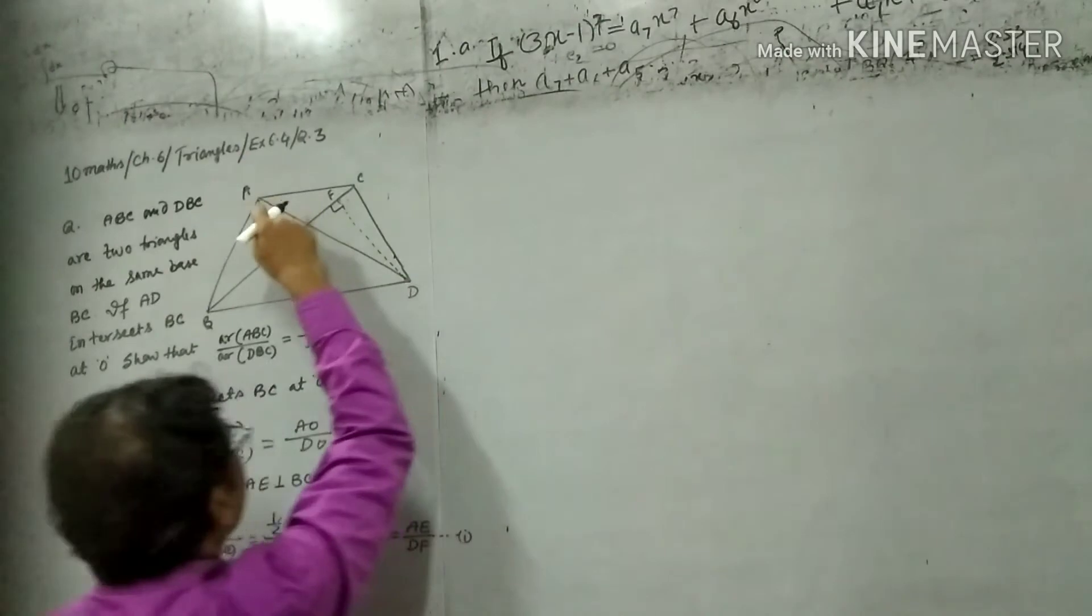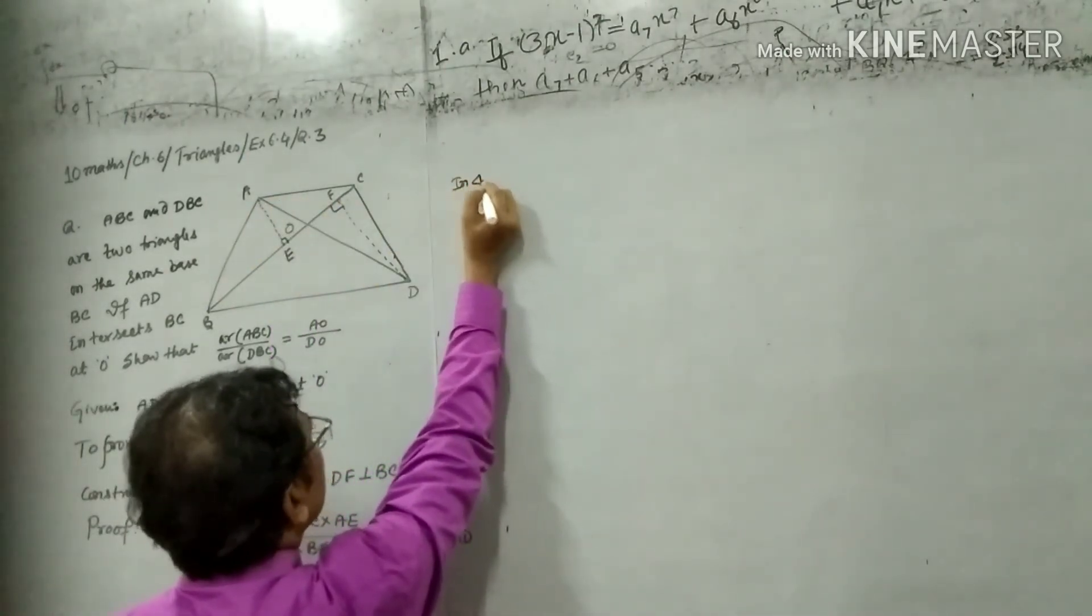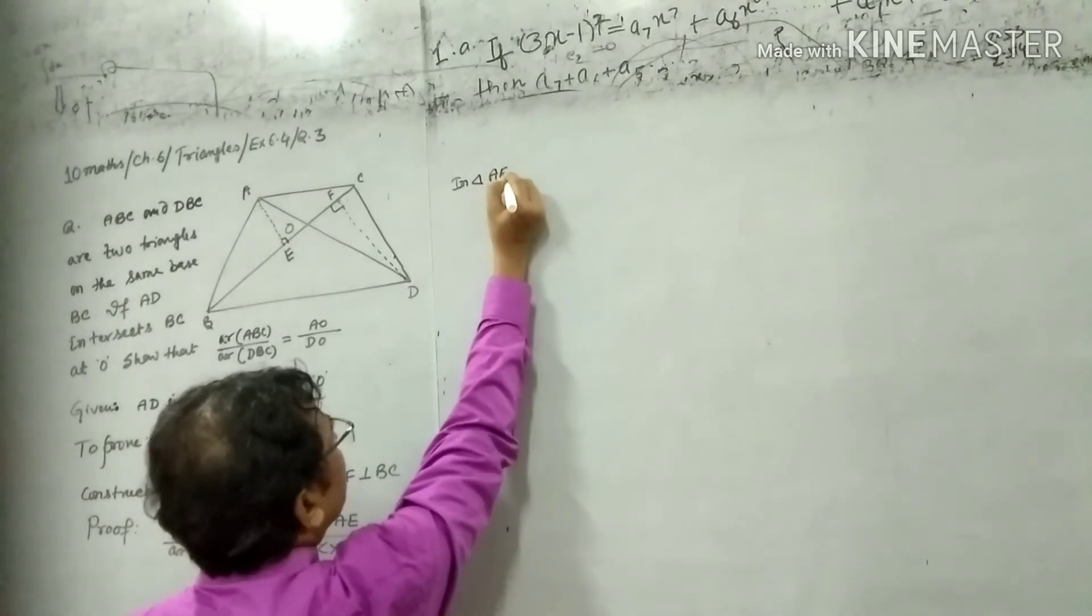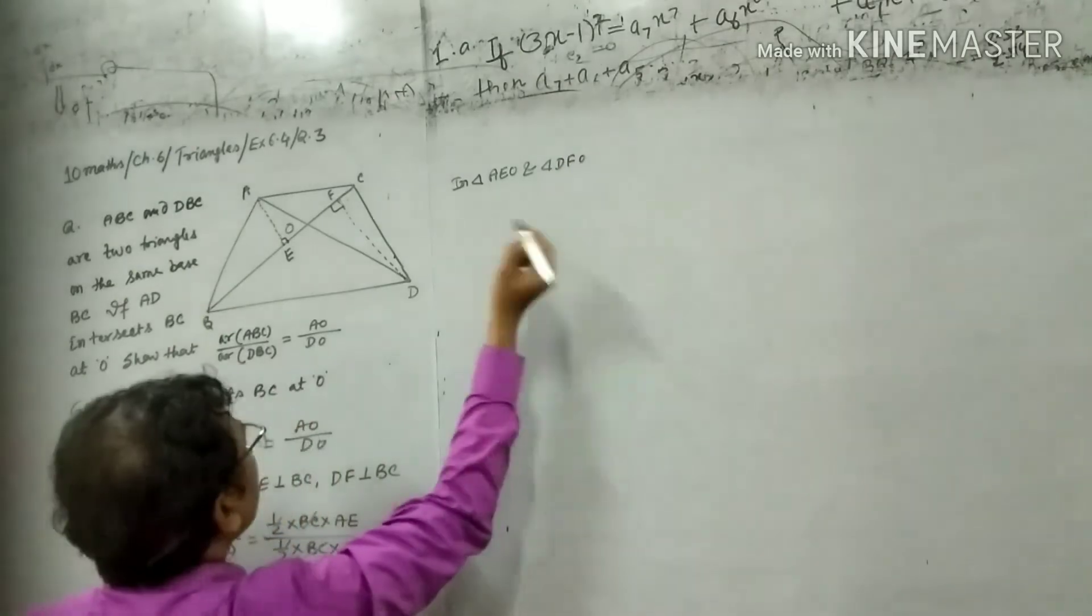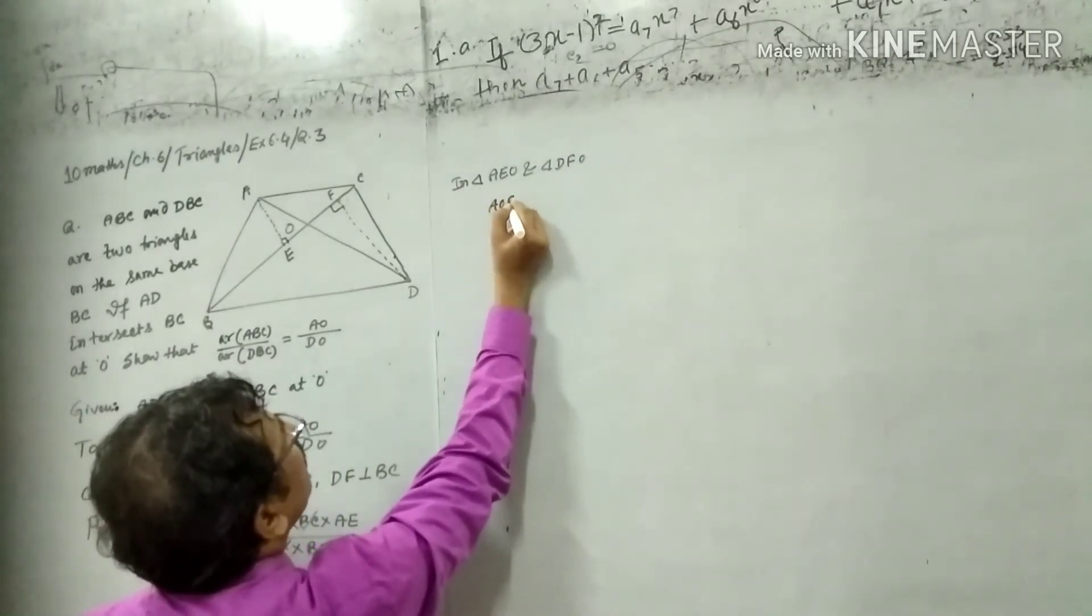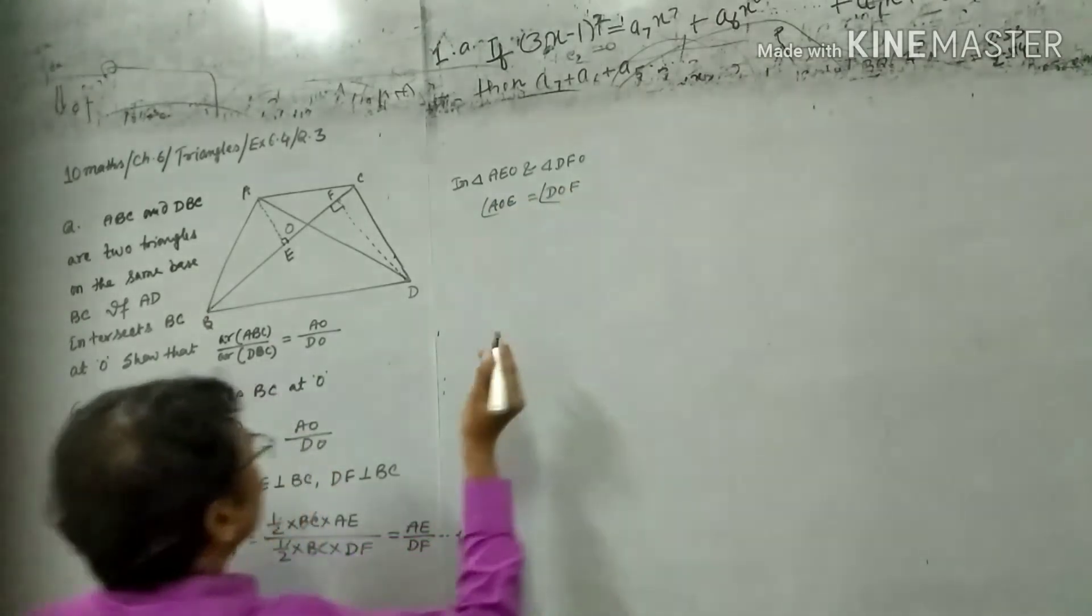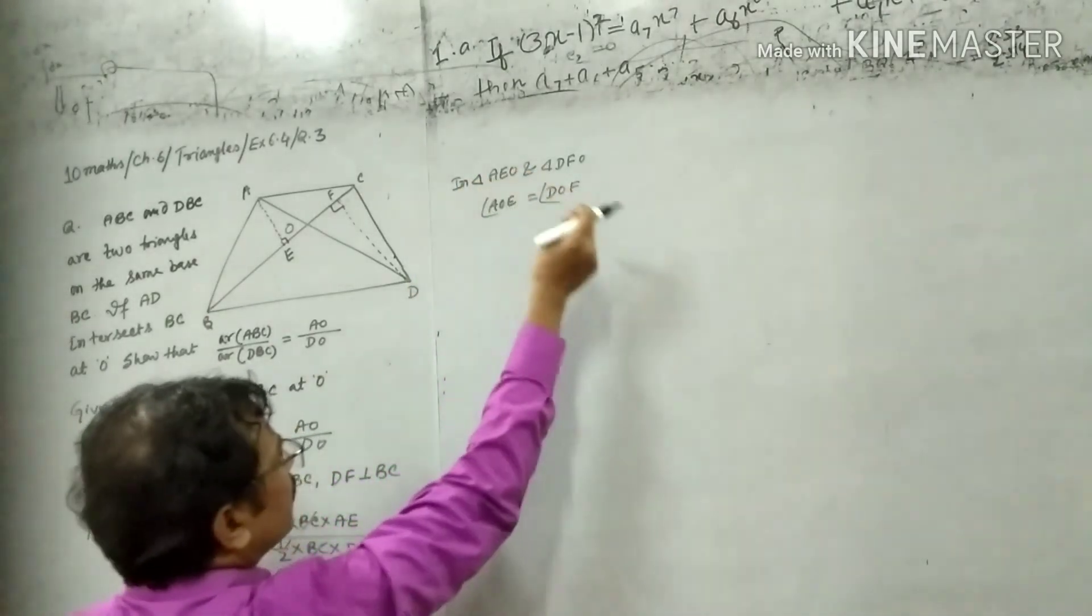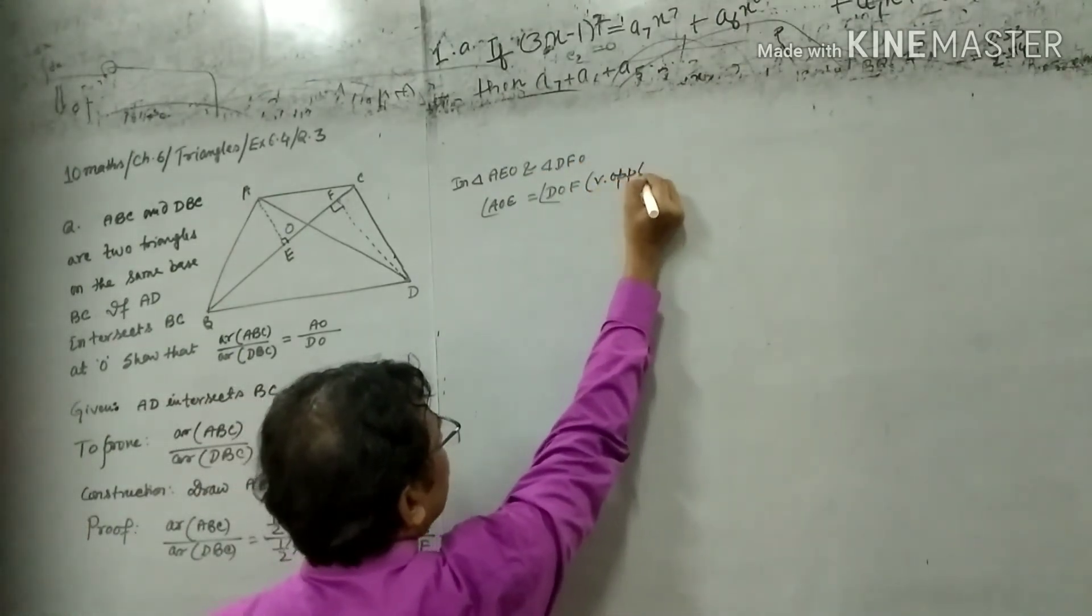Now look at the two triangles. In triangle AEO and triangle DFO, angle AOE equals angle DOF, vertically opposite angles.